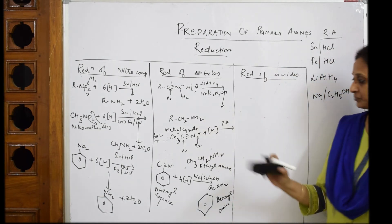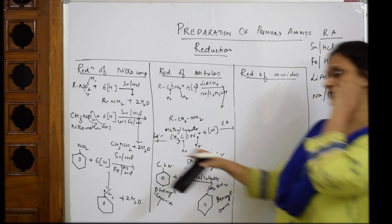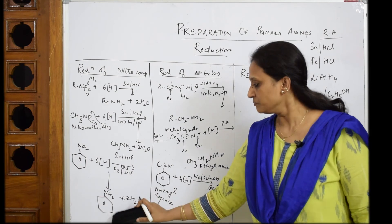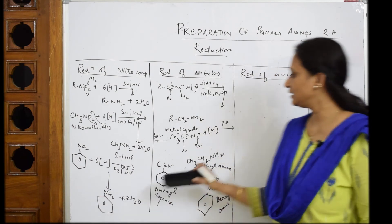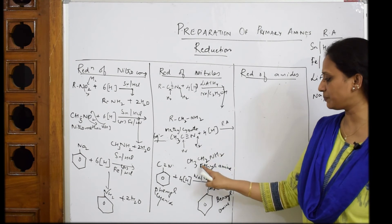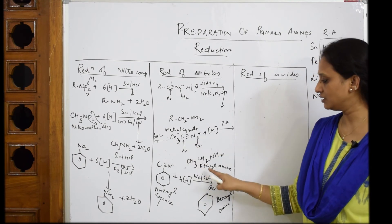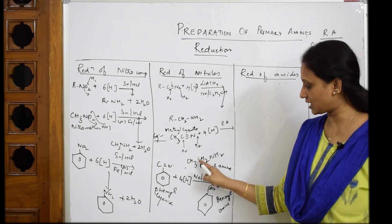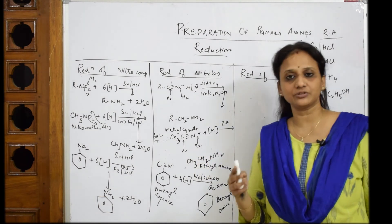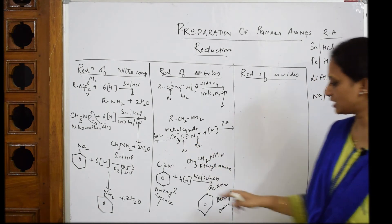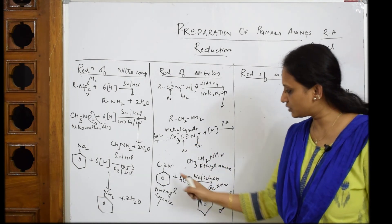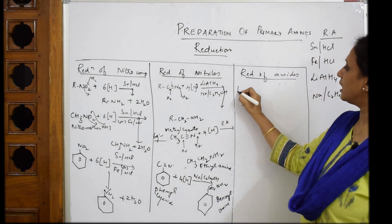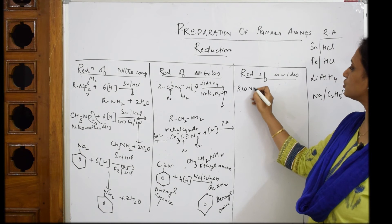Summary so far: from nitro we prepared methylamine; from nitro aromatic we prepared aniline; from cyano (methyl cyanide) we reduced and prepared ethylamine — one carbon higher, with four hydrogens added, two here and two there. Now let us look at amides. Amides have the general formula R-CO-NH₂.